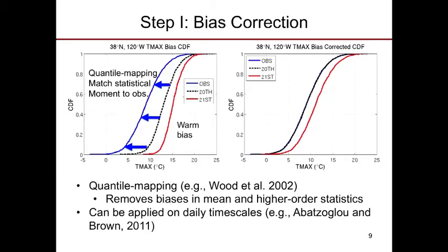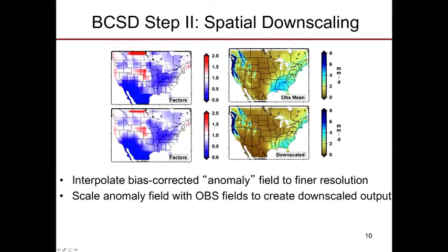The second step of BCSD is spatial downscaling. The bias-corrected GCM data is interpolated to the target grid and then scaled to the observational field. This is essentially an interpolation-based approach of applying GCM anomalies, scaling those, and then incorporating back the original observational datasets.